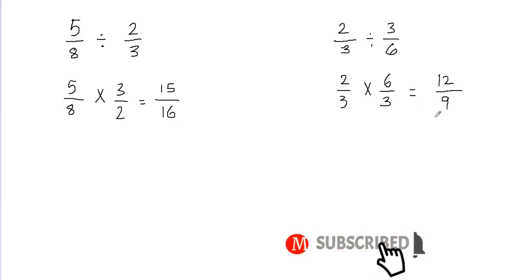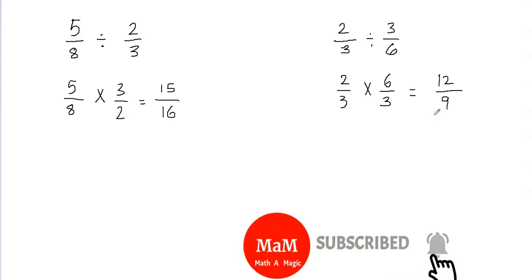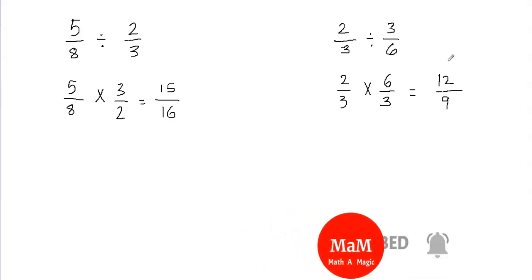Now the third and final step is to simplify the fraction if needed. Now this is an improper fraction, we'll need to convert this into a proper fraction. But before doing that, we can reduce the fraction. So 12 over 9, I can reduce this fraction by dividing the top and bottom by 3. 12 divided by 3 will give me 4, and 9 divided by 3 will give me 3.